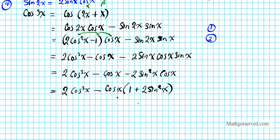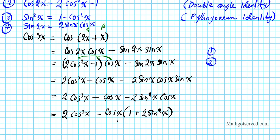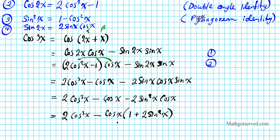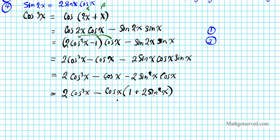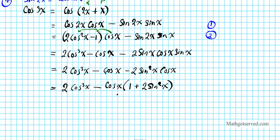Now I'm going to make use of the Pythagorean identity — number 3 — to replace sine squared x with a cosine expression. Remember, our goal is 4 cosine to the third x minus 3 cosine x, which is all in cosine, so this sine has to go. I'll replace sine squared x using the Pythagorean identity: 1 minus cosine squared x. So this becomes 2 cosine to the third x minus cosine x times (1 plus 2(1 minus cosine squared x)).